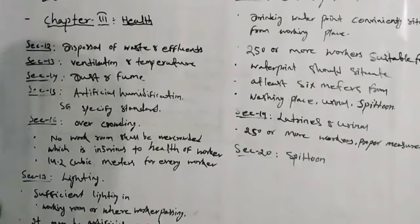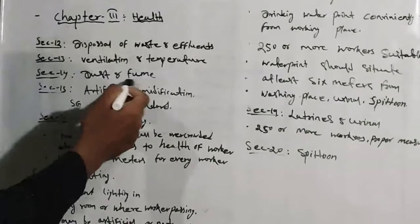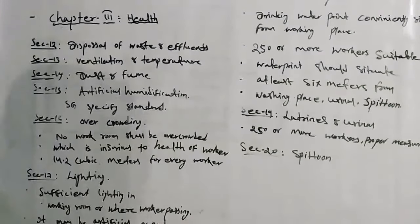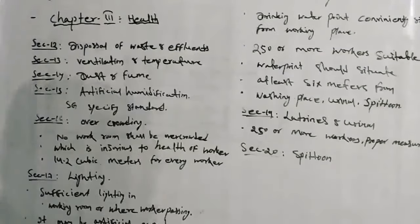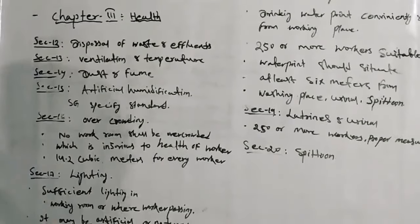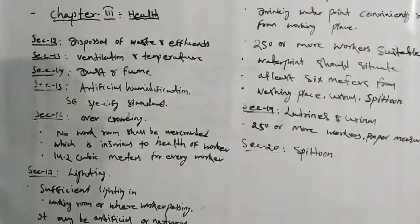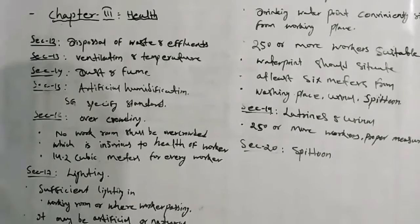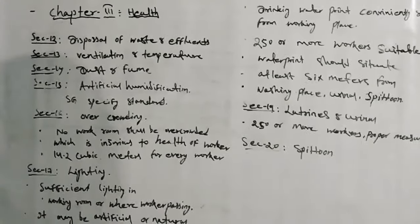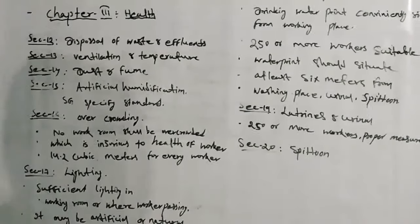Uske baad, Section 14: Dust and Fume. No working place should be full of dust and fume. Proper measures should be taken to reduce that dust and fume in the factory.